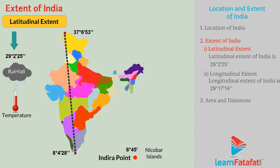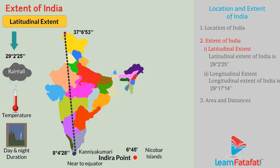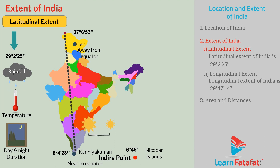Rainfall, temperature, and duration of day and night depend on latitudinal extent. For example, from the equator, Kanyakumari is nearer than Leh in Ladakh. Therefore, the difference between the longest day and shortest day near Kanyakumari is about 45 minutes, whereas near Leh the difference is nearly 4 hours.